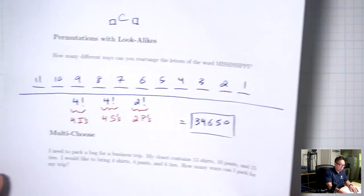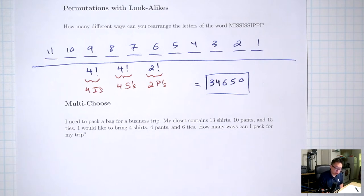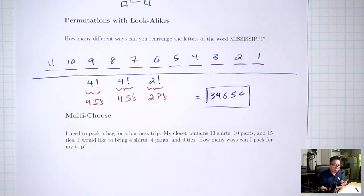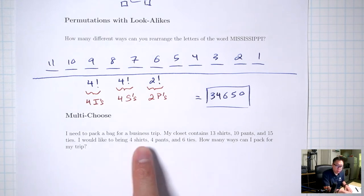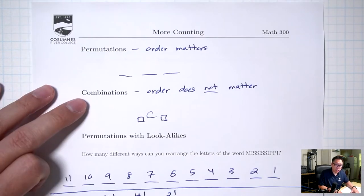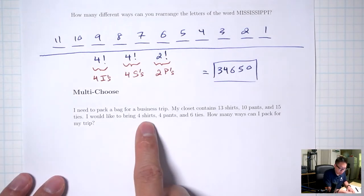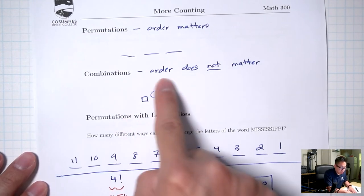The next new situation is called multi-choose. For example: I need to pack a bag for a business trip. My closet contains 13 shirts, 10 pants, and 15 ties. I'd like to bring 4 shirts, 4 pants, and 6 ties. Does the order matter when picking these shirts? No — I just throw them in the suitcase. This is similar to a combination, but the difference is you're choosing multiple times: shirts, then pants, then ties.